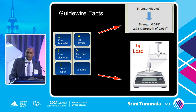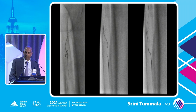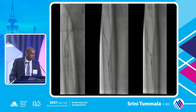What about tip load? It's the minimum grams of pressure needed to deflect the distal one centimeter of a guide wire two millimeters. Looking at three guide wires — low, medium, and high tip load — the low tip load wire has a lot of prolapse, the medium a little less, and the high tip load wire has almost no prolapse, which is why it's more likely to dissect or penetrate a cap. But that also raises the risk of perforation.